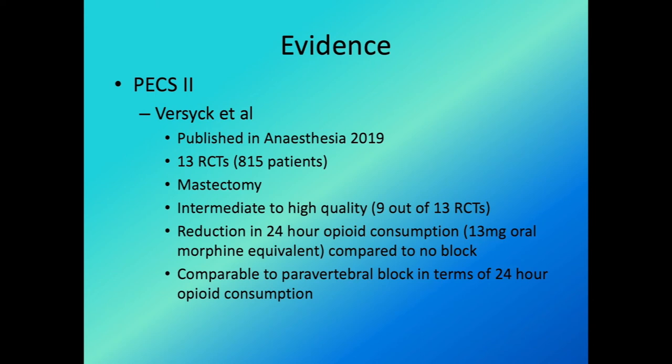The evidence for PECS2: one meta-analysis published in 2019 of 13 RCTs involving about 815 patients, mostly undergoing mastectomy. The quality of evidence is intermediate to high. It shows a reduction in 24-hour opiate consumption compared with no block — up to 13 mg of oral morphine equivalent — and is comparable to paravertebral block in terms of 24-hour opiate consumption.